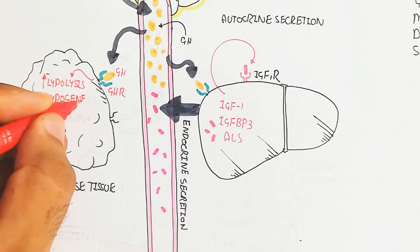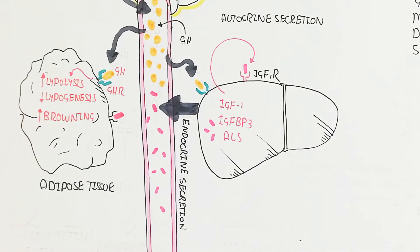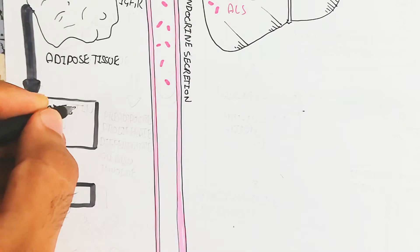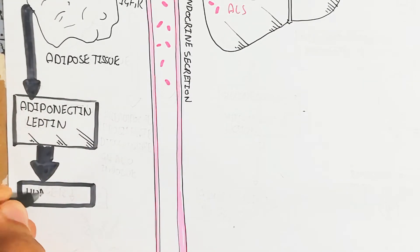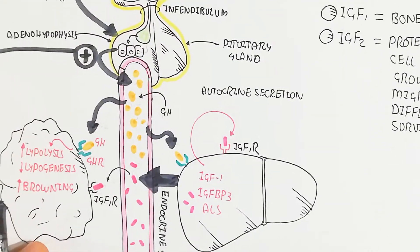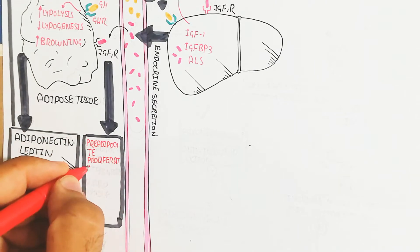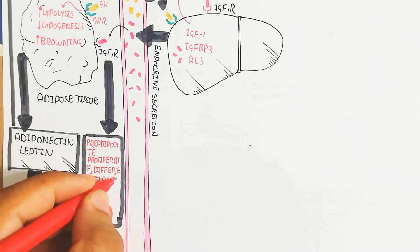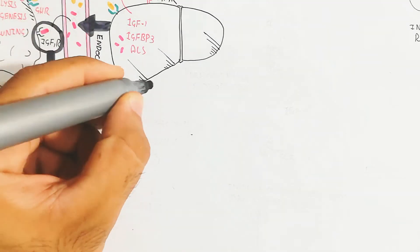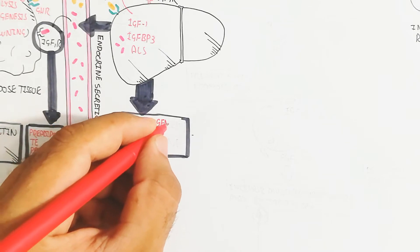After IGF-1 binds with the IGF-1 receptor on adipose tissue, it changes the physiology. Growth hormone increases lipolysis, decreases lipogenesis, and increases browning of adipose tissue. Lipolysis also produces adiponectin and leptin, which suppress hunger and provide positive feedback to release more growth hormone. During fasting, the IGF-1 receptor promotes pre-adipocyte proliferation and differentiation — developing adipose tissue.